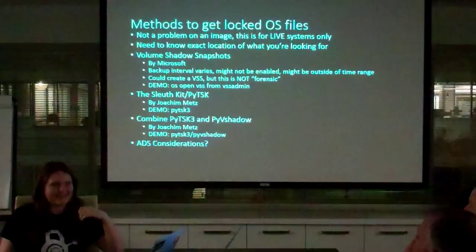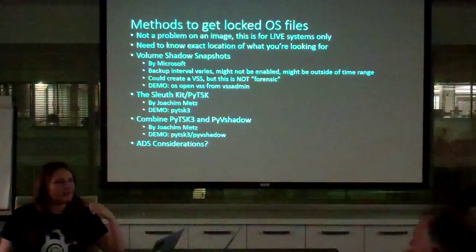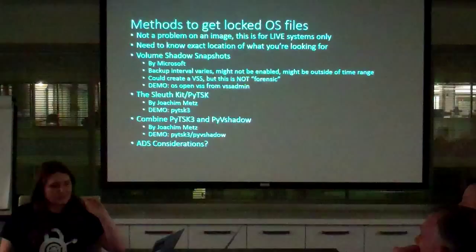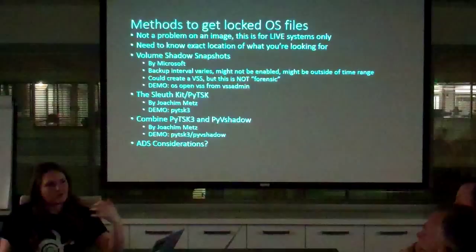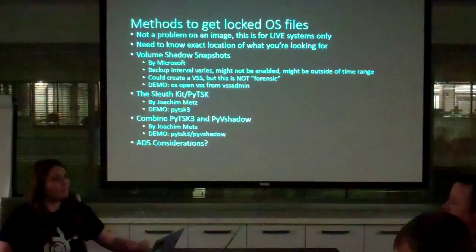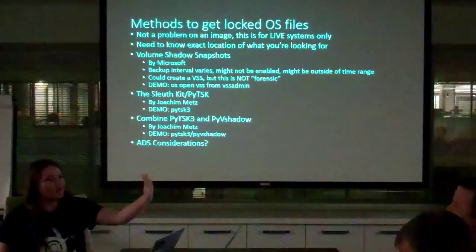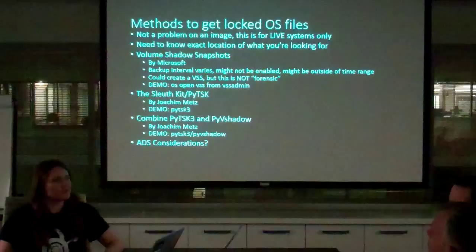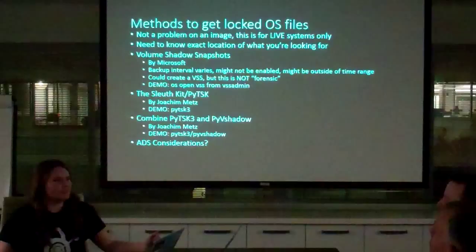Volume shadow snapshots — you know those restore points you can roll your Windows computer back to? Those are snapshots. It doesn't make a copy of every file on your disk; it takes note of which blocks have changed, and they're pretty easy to reassemble. Volume shadow snapshots are a fairly accessible way to get a file at a snapshot in time. This could be interesting if I think someone stole something a month ago and I have a snapshot from then. Windows 7 runs them every Wednesday night or so by default, though admins often disable them for space.